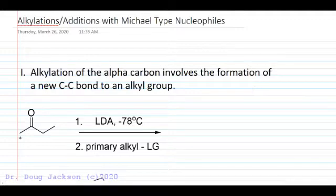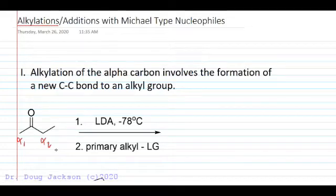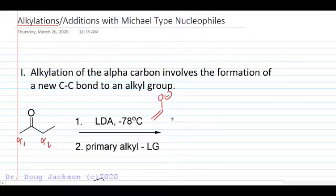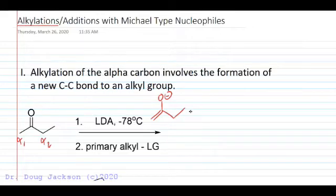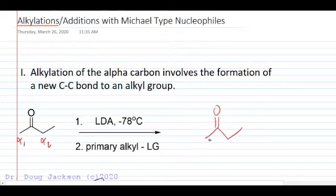We've got an unsymmetrical ketone that has two different alpha carbons — that's the scenario where we have to pick which side we're going to bias towards enolate formation. At negative 78 degrees, the product of the first step would be a kinetic enolate to the less substituted side. At zero degrees, we'd go to the more substituted side. In the second step, we accomplish the alkylation at the alpha carbon by adding our primary alkyl group.